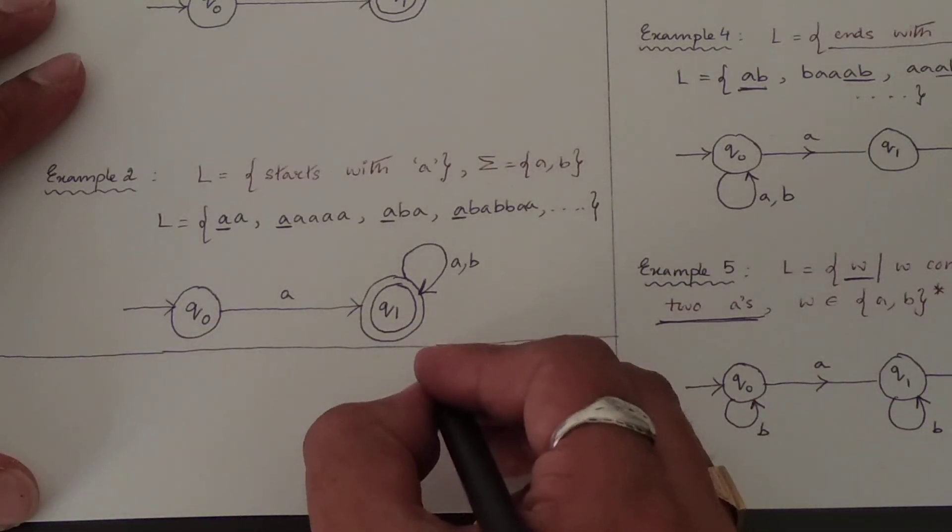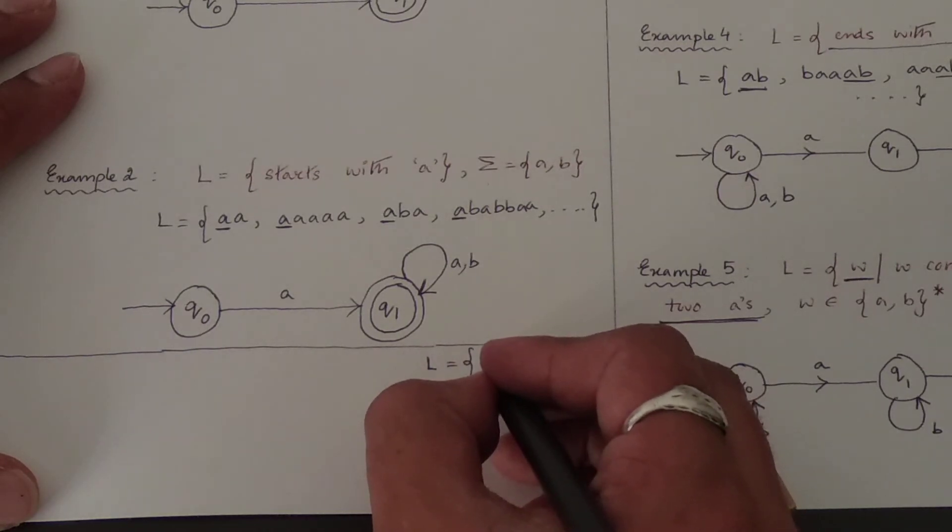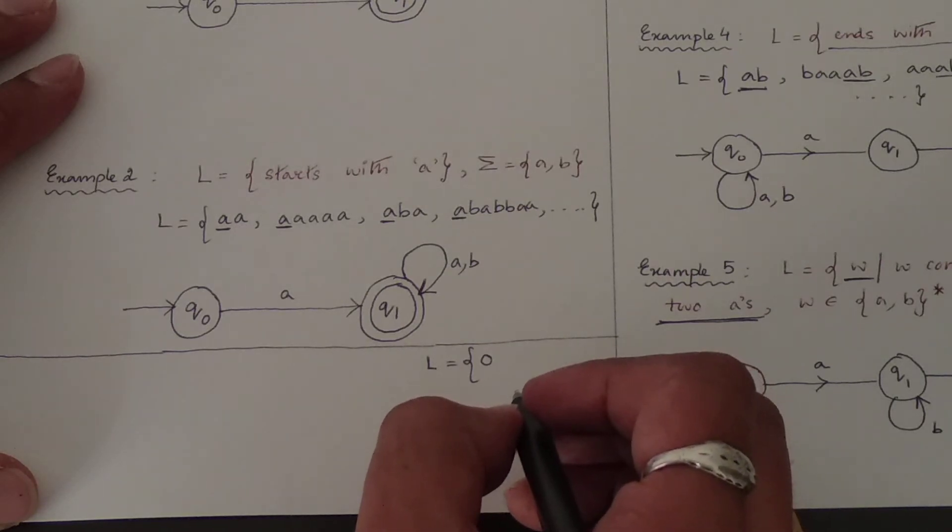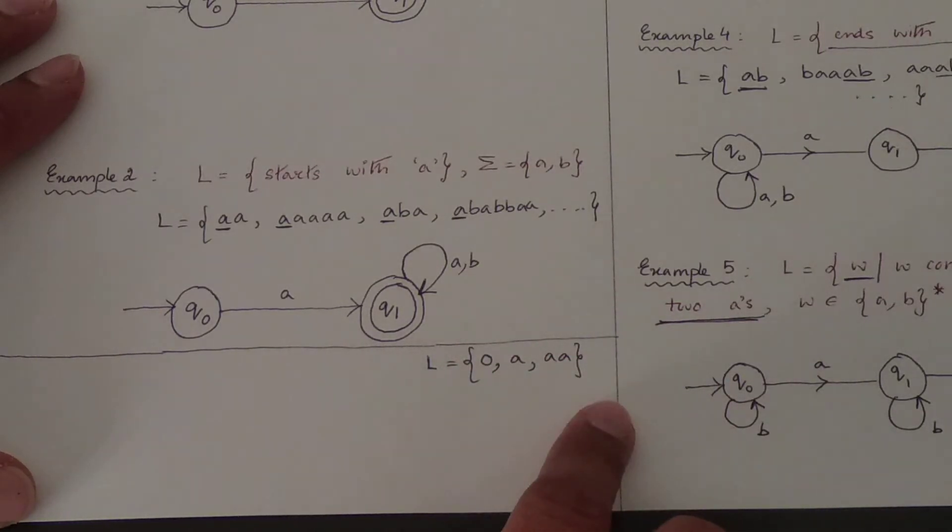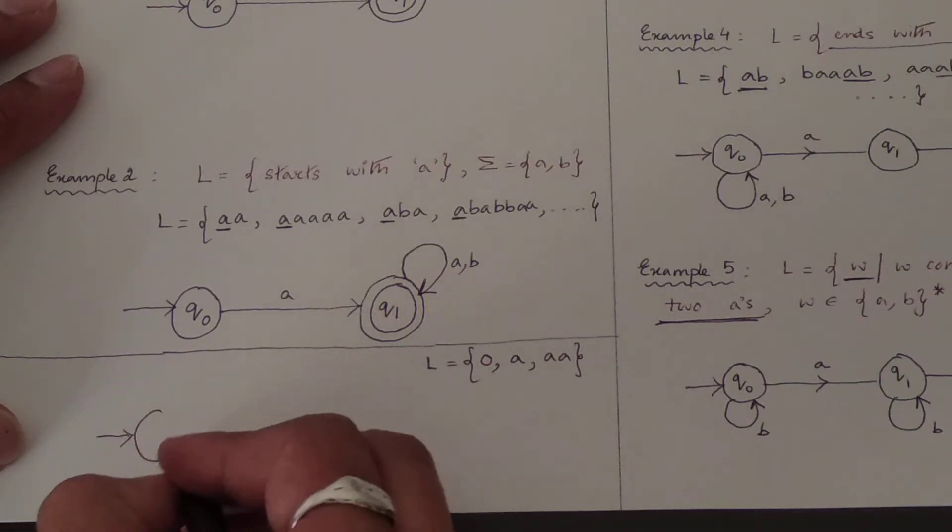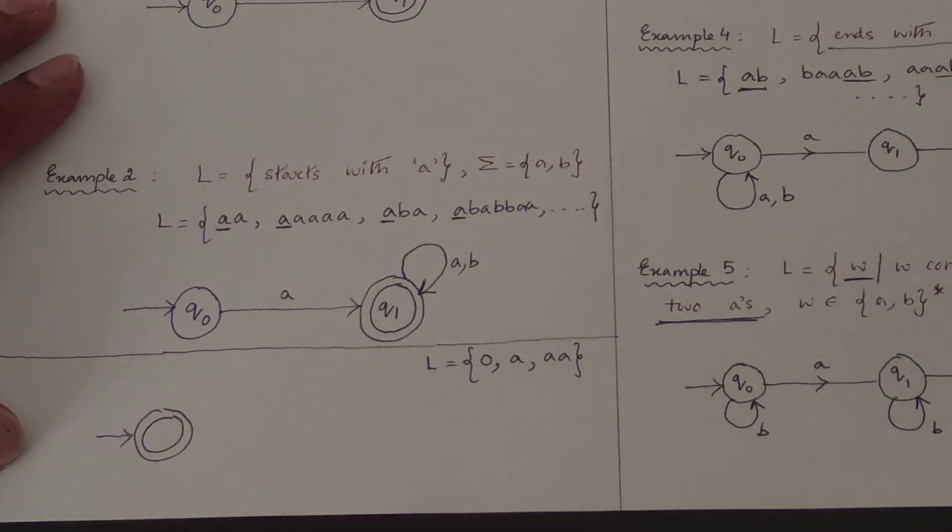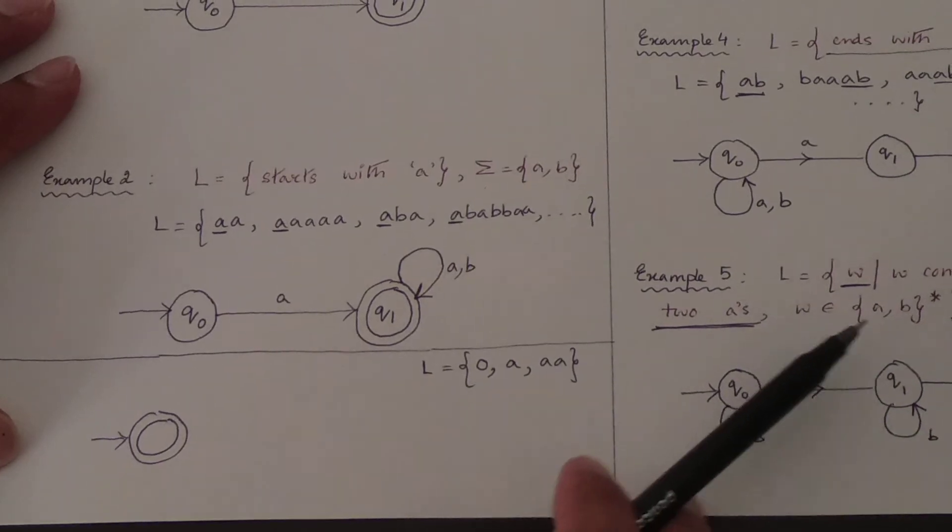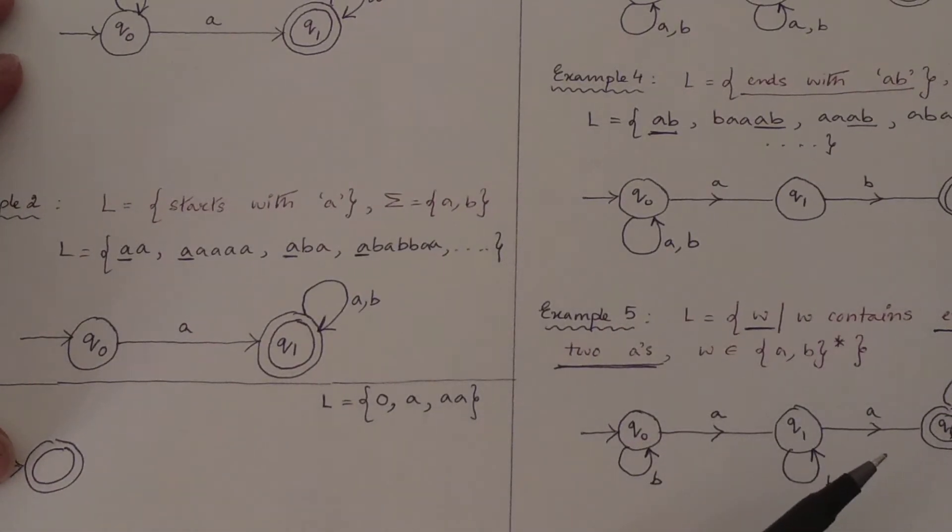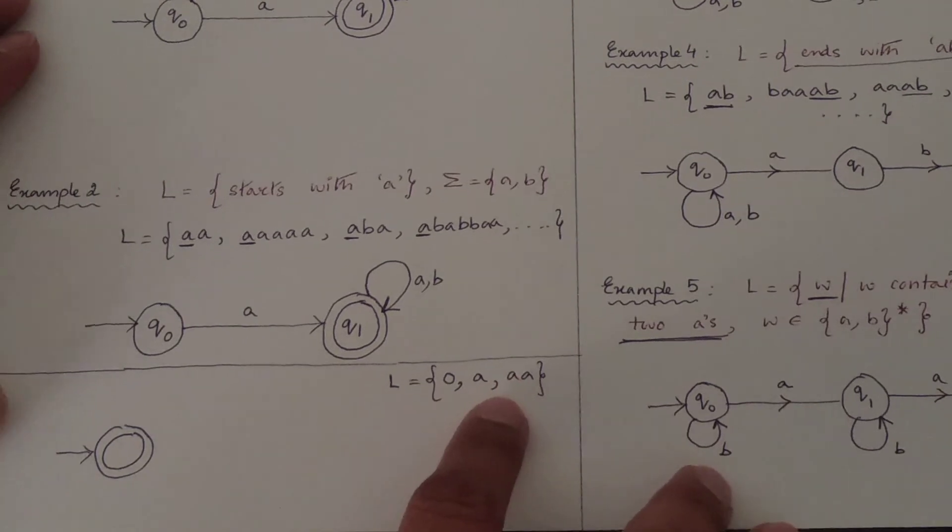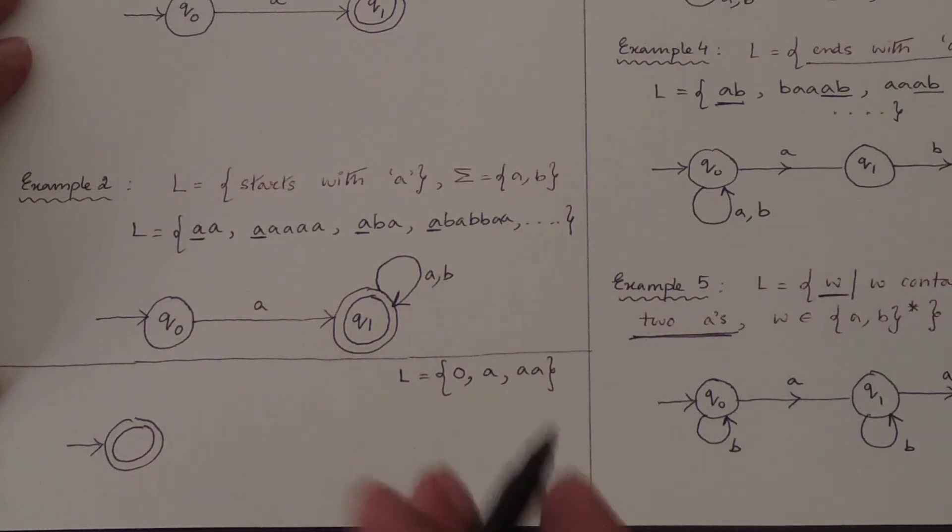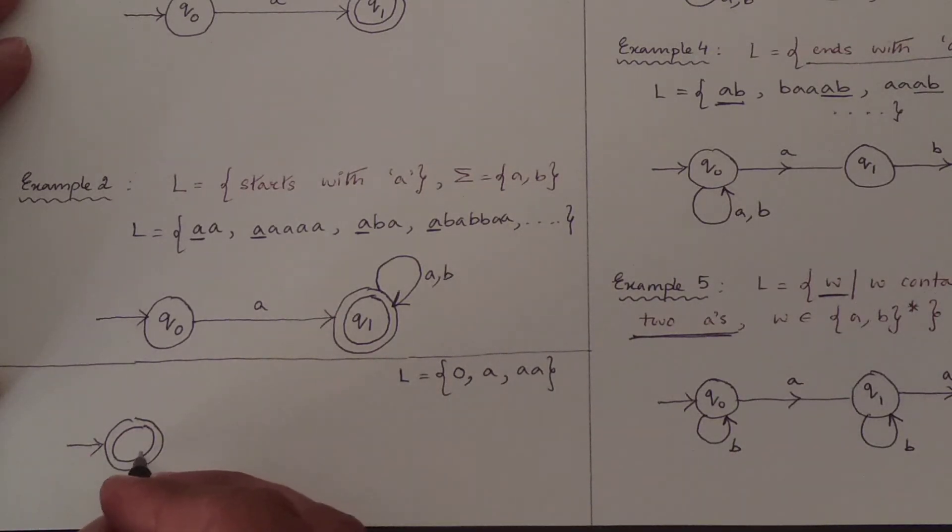At most two A's, it's very easy. First you check the language, what will be the language part? At most two A's means first it will be zero, null. There is null, negative values are not possible. Zero, single A can be possible, or two A's can be possible, not more than that. These three conditions are possible. So zero means what? Initial will be your final. Initial will be your final. But here is a problem with that, the language is a collection of both A's and B's. So there might be a possibility that you might have N number of B's. There might be a possibility that there is no restriction for B's.